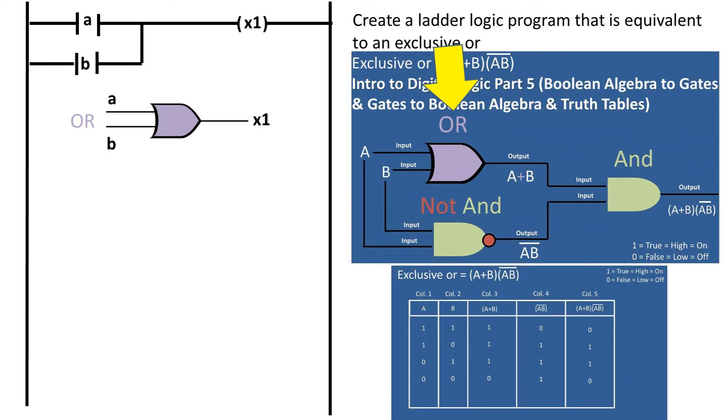So to begin, we need to make an OR gate with inputs A and B. We do this by putting two normally open contacts for A and B in parallel with each other. This will go to an X1 output, which is a normally open coil, or normally off until a true signal is registered.